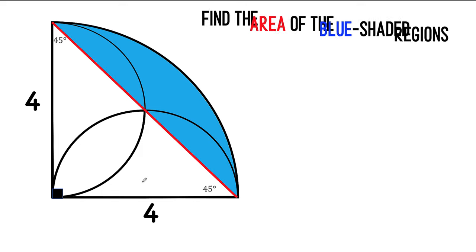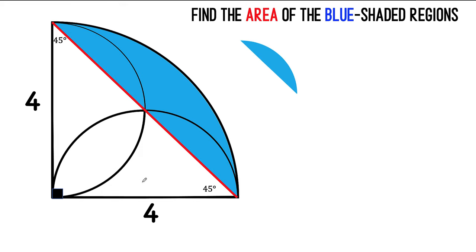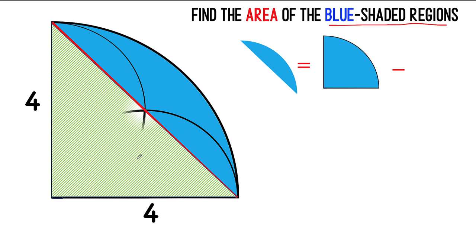So let's write that observation. We now say that the area of this blue shaded region, which is equivalent to the blue shaded region that we want to find, is equal to the difference between the area of the quarter circle minus the area of this right triangle.